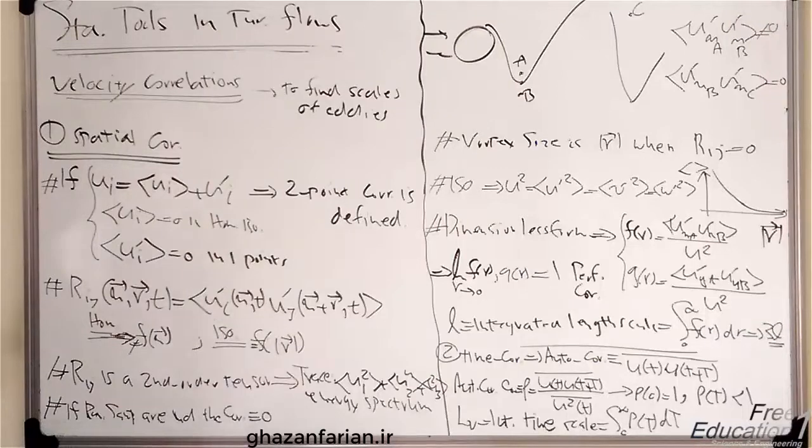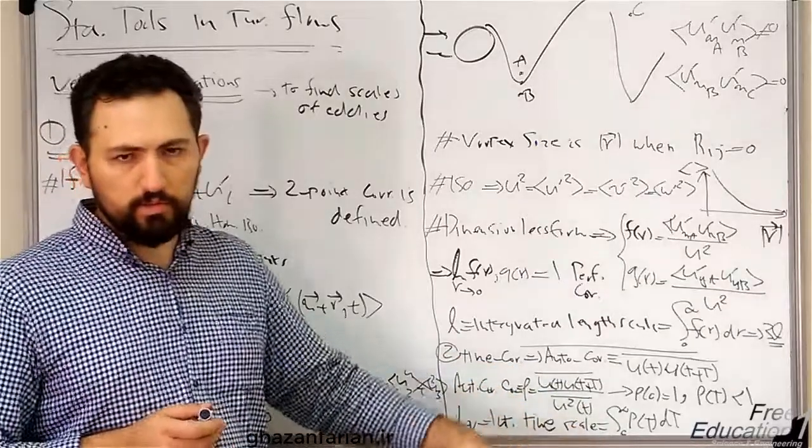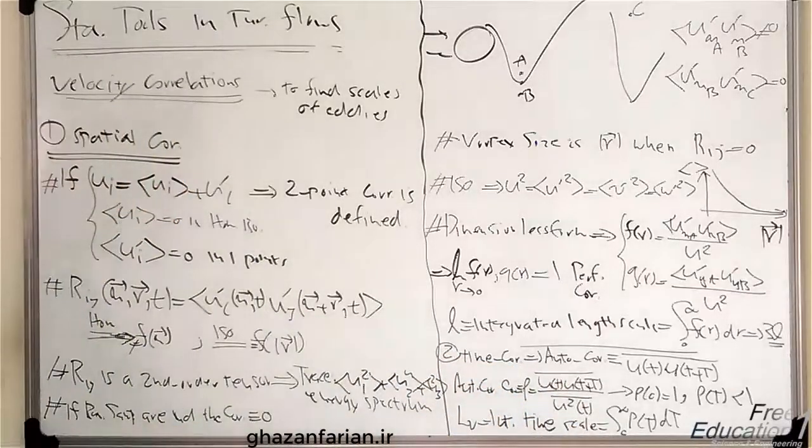We have two types of correlations. The first one is the spatial correlation, and the next one is the time correlation, or temporal correlation.